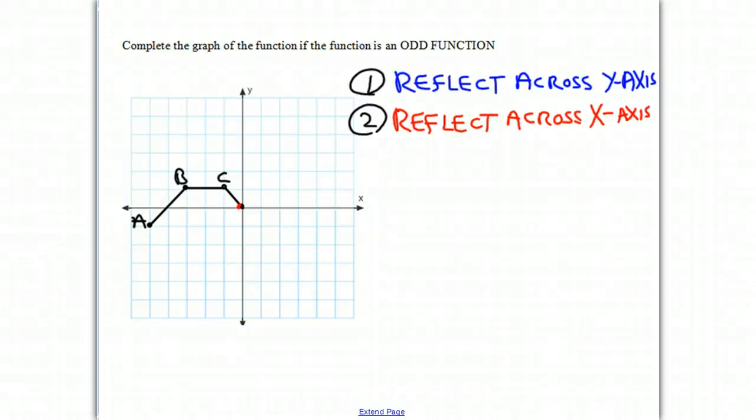Today we're going to complete the graph of a function if the function is an odd function. We're given a graph that you see on the board and we're saying it's an odd function, but for it to be an odd function, there must be some more of it missing.